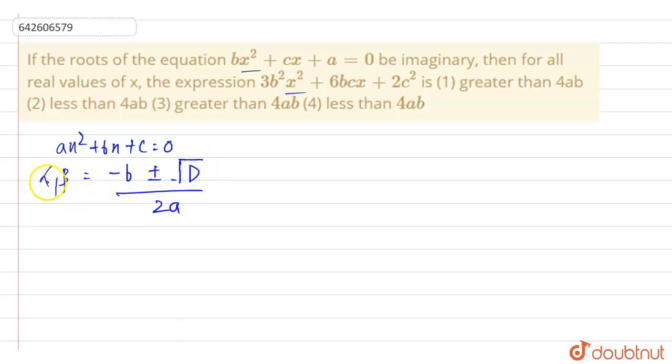So if we are telling that alpha and beta are imaginary, this root value should be negative. So D should be negative because if D is negative, root under negative is iota and thus our alpha beta will become imaginary. So this is the condition when a quadratic equation's roots are given to be imaginary.